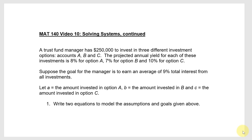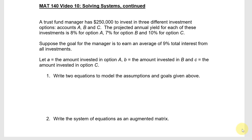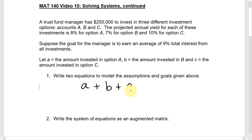Question 1: Write two equations to model the assumptions and goals given above. We start off with A plus B plus C, each of those amounts, equal to the total $250,000 that's to be invested.